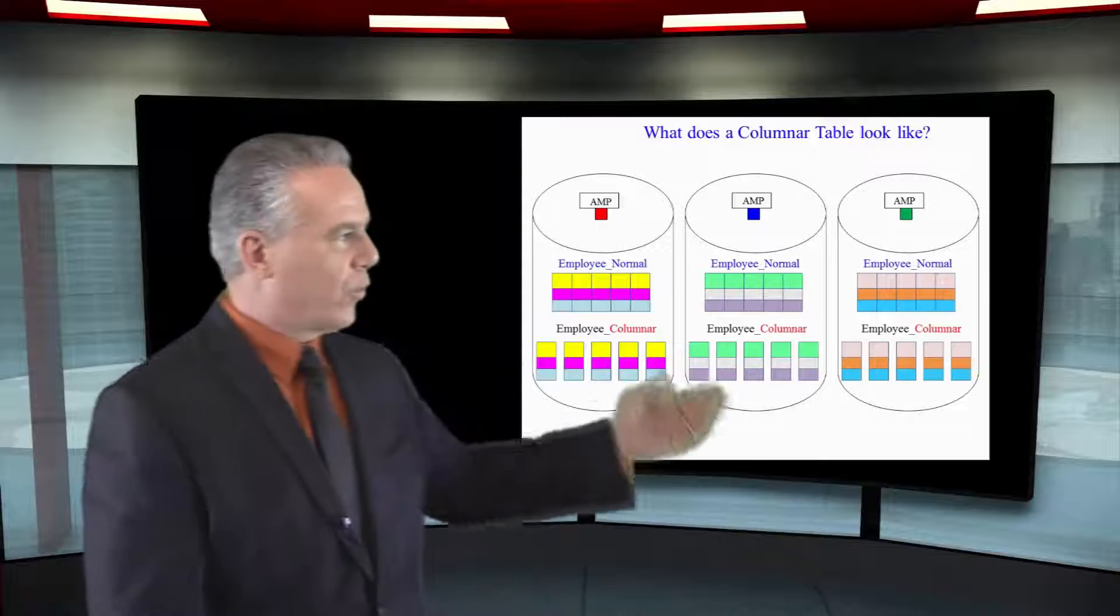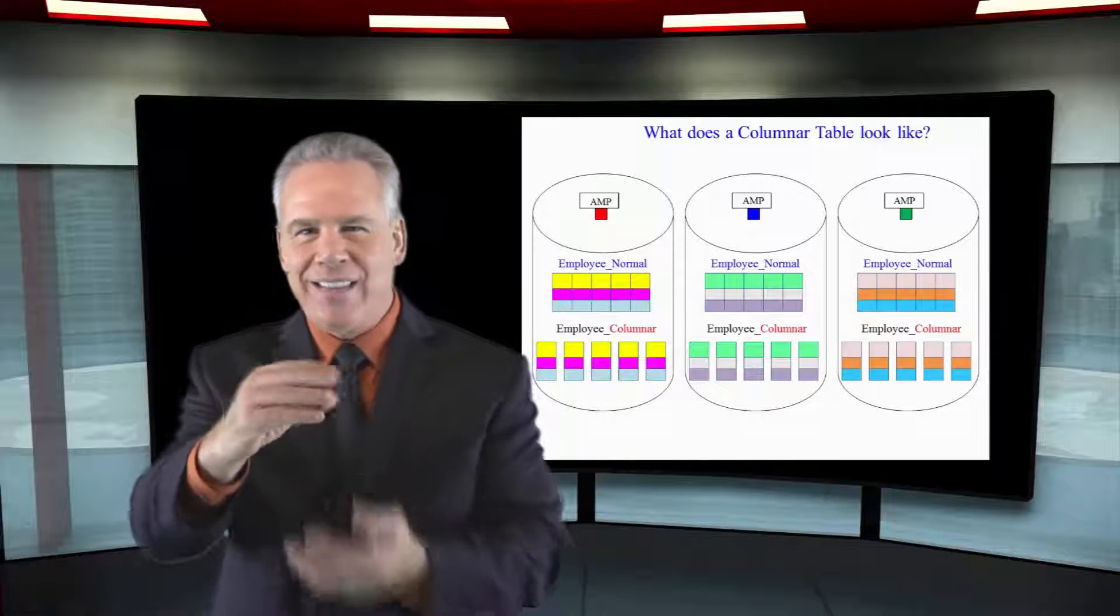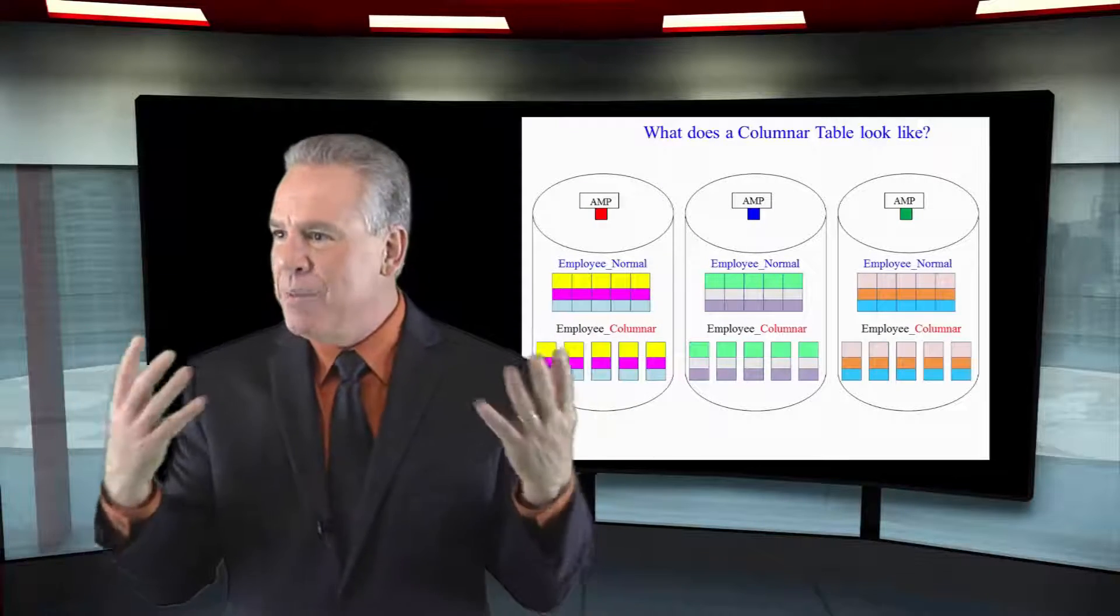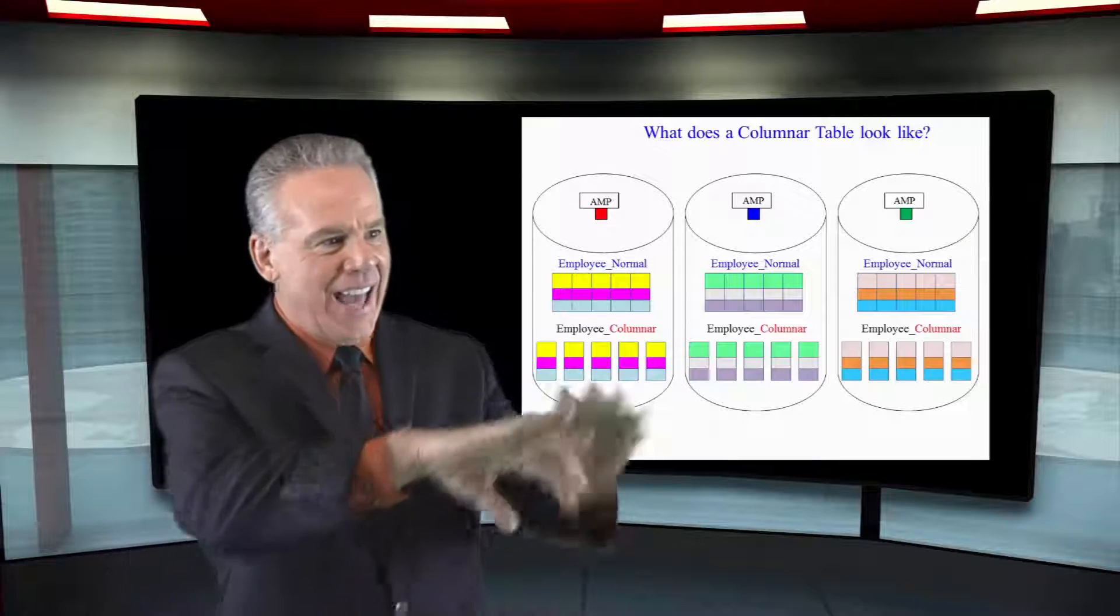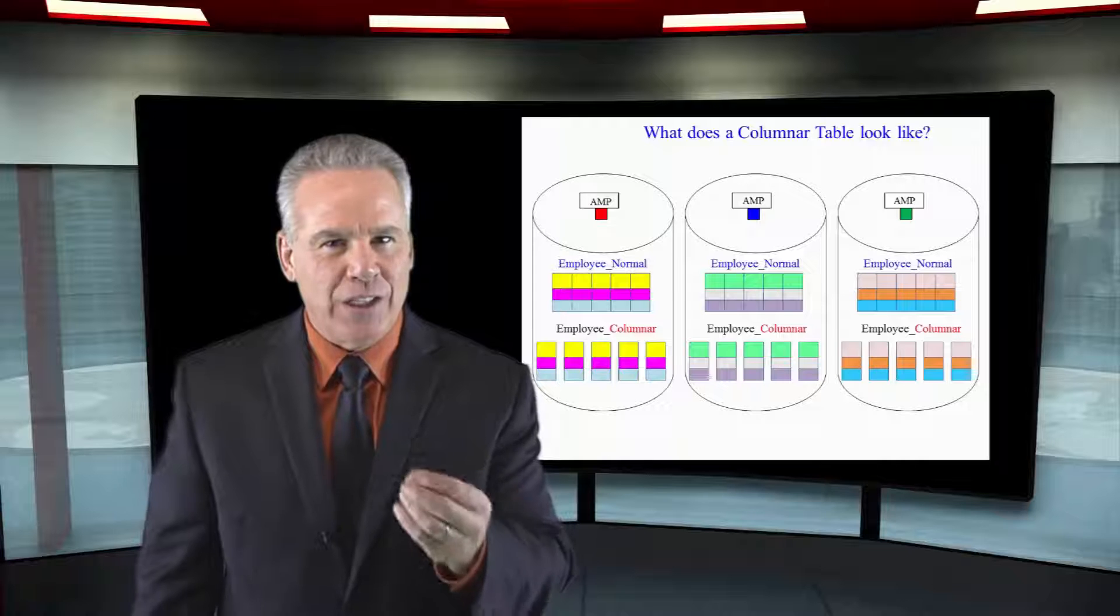Each of those three rows on each AMP is in its own block. That's how we're used to seeing Teradata. We know that row has got a column in it at the primary index. It hashed to the proper AMP.